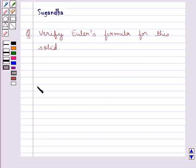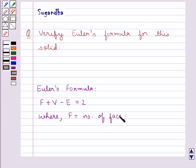First, let's discuss what Euler's formula is. Euler's formula is F + V - E = 2, where F is the number of faces of the polyhedron.